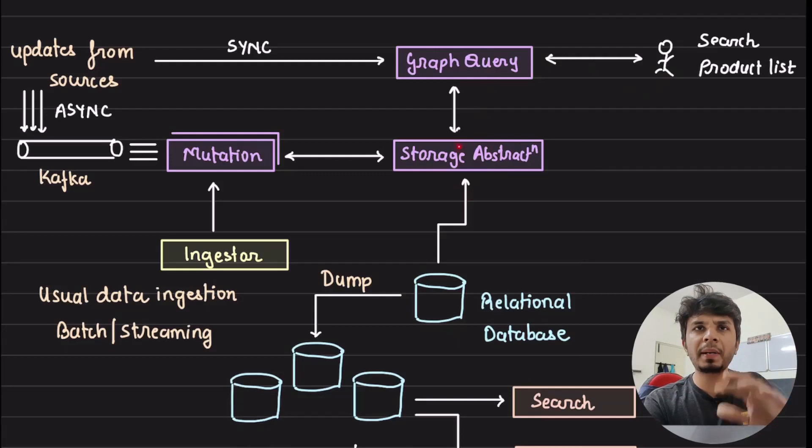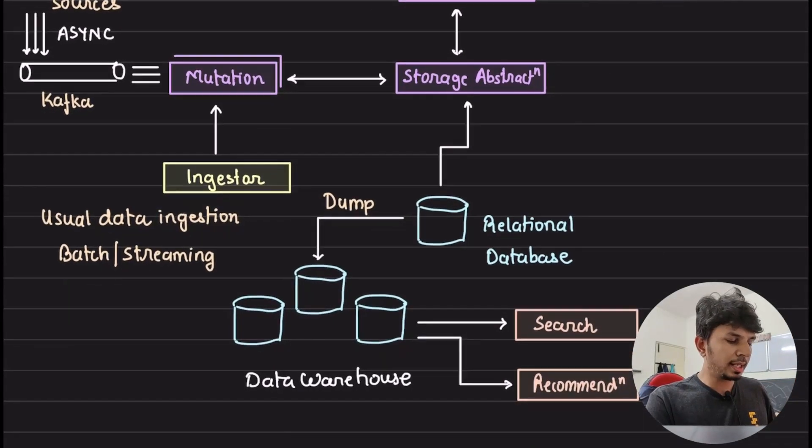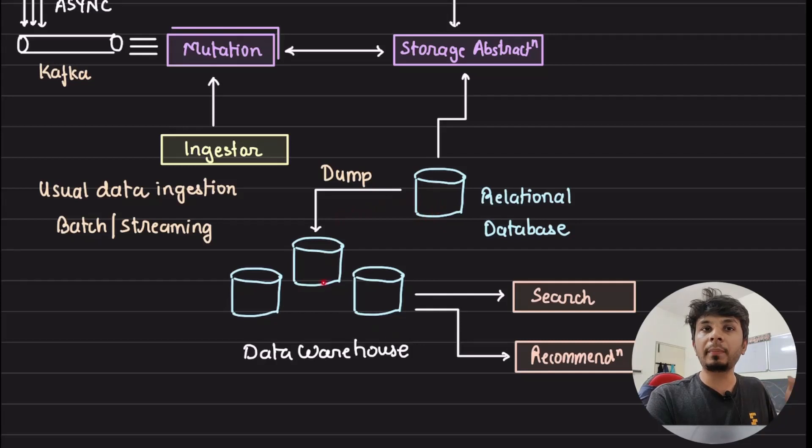So graph query, instead of directly talking to the relational database, they are talking to a storage abstraction. It's purely your implementation. If you don't want to do that, don't implement it. Let directly your API handler invoke the, like, basically convert it into SQL query and fire it. But this storage abstraction's job would be to primarily take the JSON input, convert it into the SQL query, and fire it onto the relational database, get the response, send it back to the user. Done.